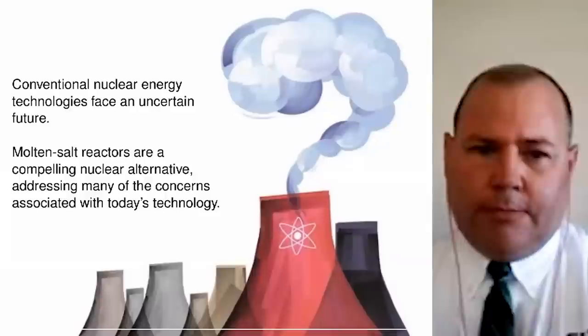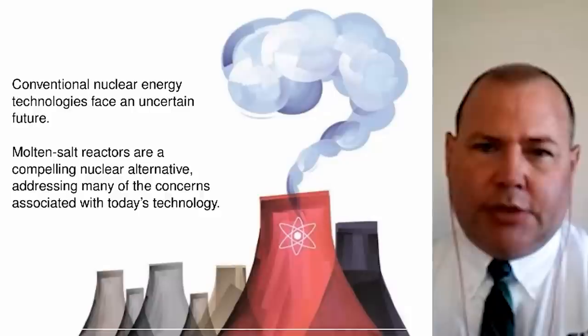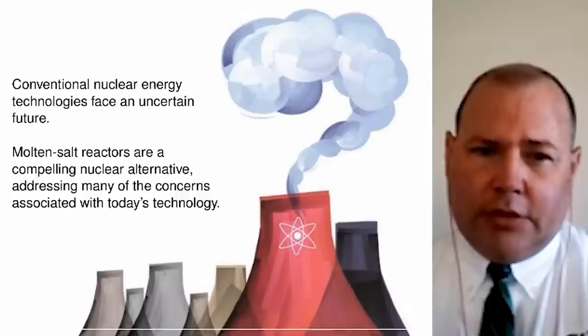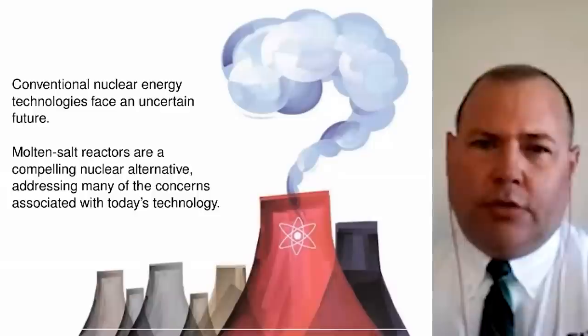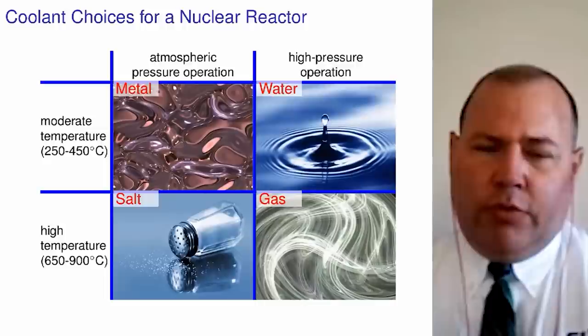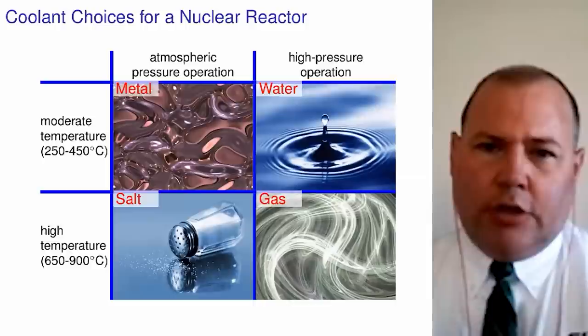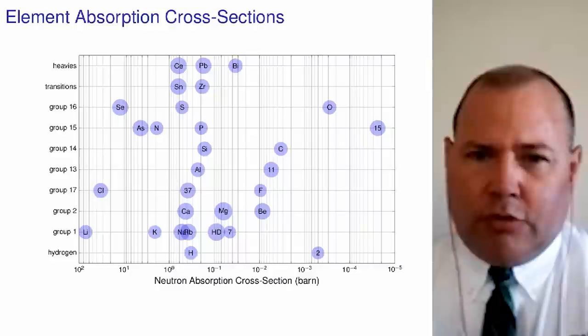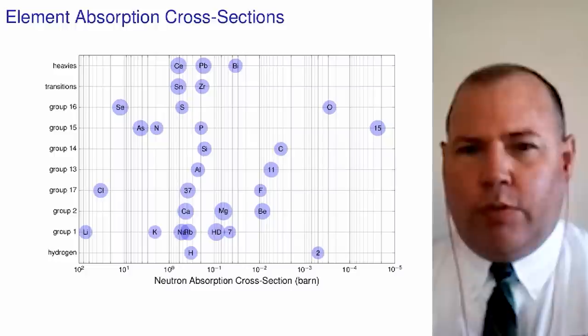We're compelled to look at alternatives to today's power generation because of uncertainties both in terrestrial production, carbon emissions, as well as existing nuclear technologies. We believe strongly that molten salt reactors are a very compelling alternative. The value proposition for molten salt is that this is the only coolant choice that can operate at really quite high temperatures as well as at low pressures. But you have to figure out what you're going to make the salts out of, and if you look at materials with low absorption cross sections, the field narrows pretty quickly when you're trying to do something neutronically efficient.